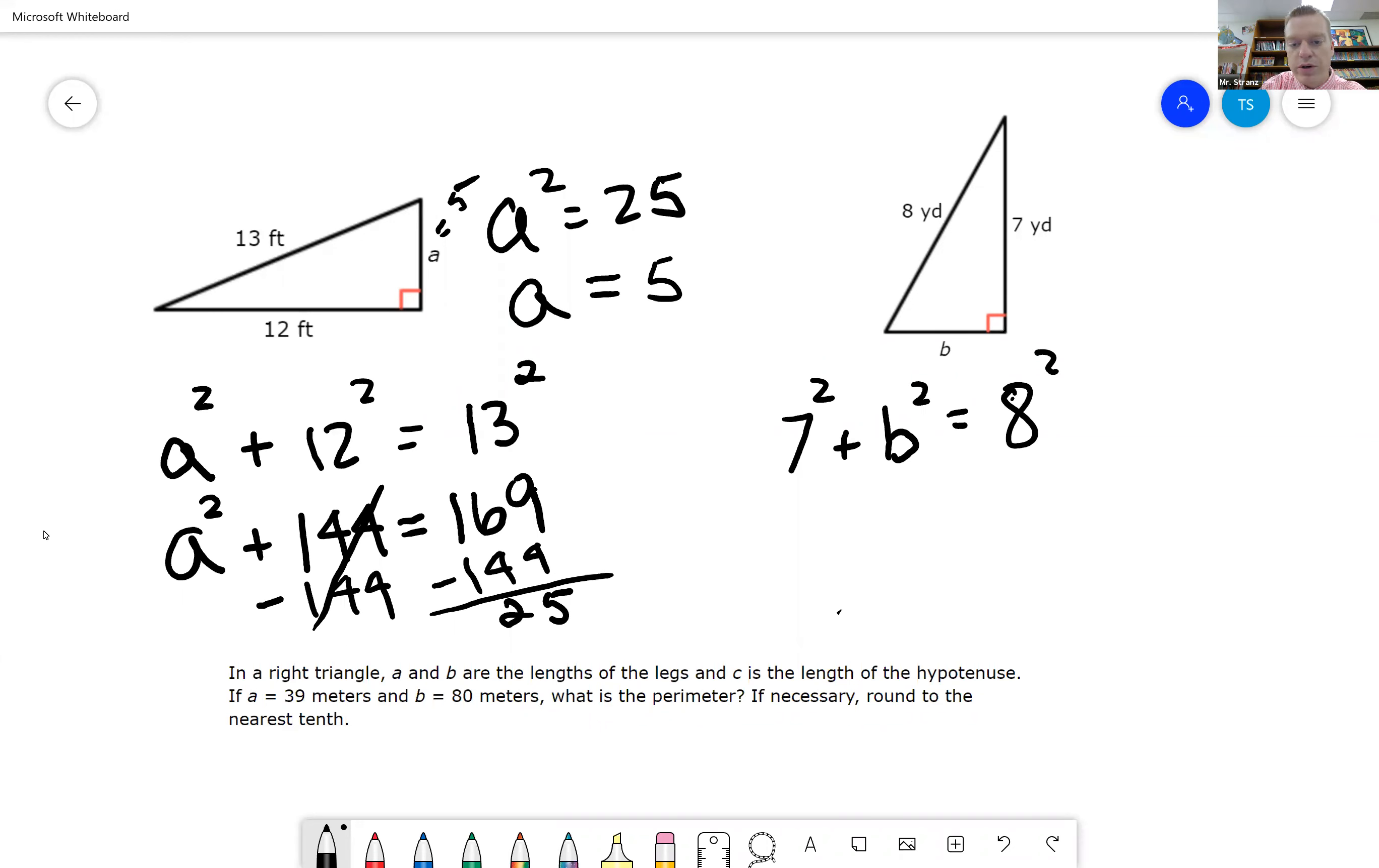So 7 squared is going to be 49, 49 plus B squared equals 8 squared is 64.